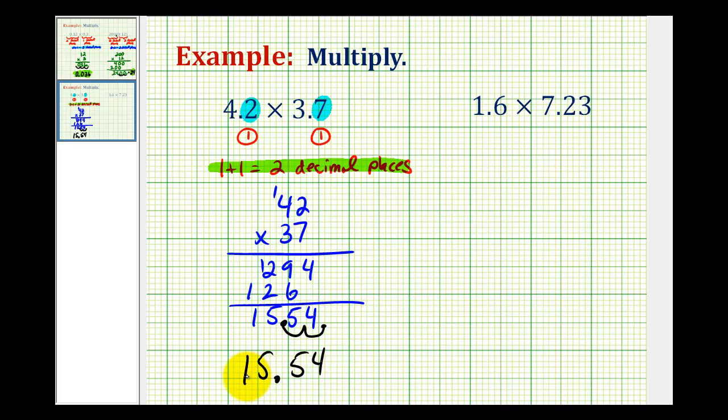And the reason why this product must contain the hundredths place value is, notice how we have four point two, or four and two tenths, times three point seven, or three and seven tenths.